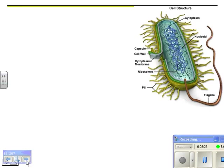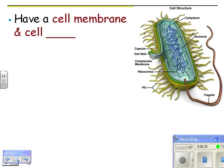More about prokaryotes: they have a cell membrane and a cell wall. The cell wall is different from any cell walls in eukaryotes, but they do have one. If you look at this diagram, the blue stuff is the DNA, the green things are the ribosomes. That's kind of it — there's cytosol, ribosomes, and DNA.